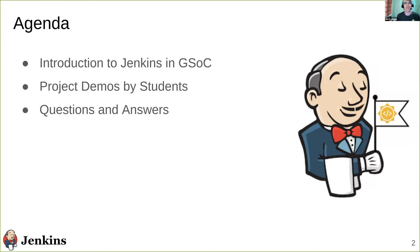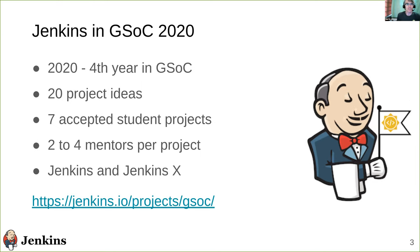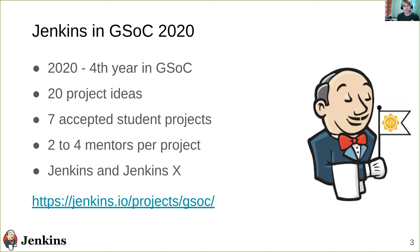We'll have project demos by our students, and we'll have a question and answer session. This is our fourth year in Google Summer of Code as the Jenkins organization. This year we had about 20 project ideas. We were able to accept seven students, so we now have seven live projects. We have two to four mentors per project this year, which is great.